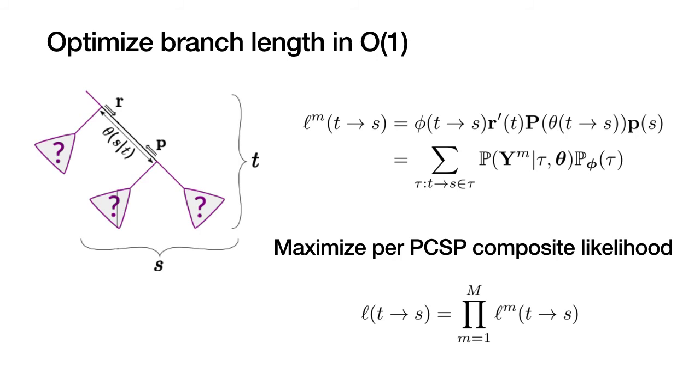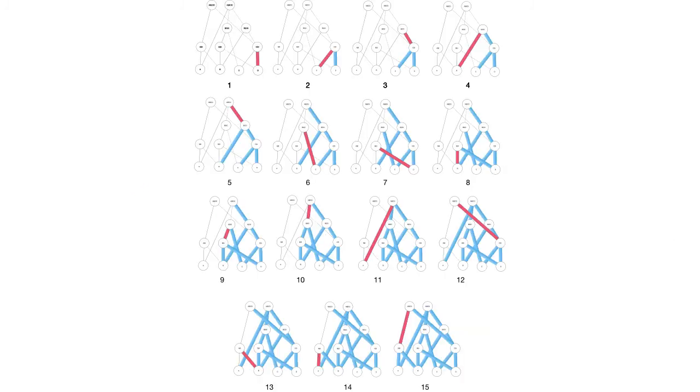So now we are back to this slide that I showed earlier. So we can compute per PCSP exact marginal likelihood for each site where we marginalize over the trees that contain PCSP T to S. Then we combine this per PCSP marginal for each site to form a composite likelihood function and use it as an objective function to estimate the branch length. We can evaluate the composite likelihood in O(N) for each branch length, which is fast enough to be used with gradient-free method. I have not included it as a part of this talk, but we can also compute gradients using the PLVs, which means that we can use gradient-based methods to optimize the branch length.